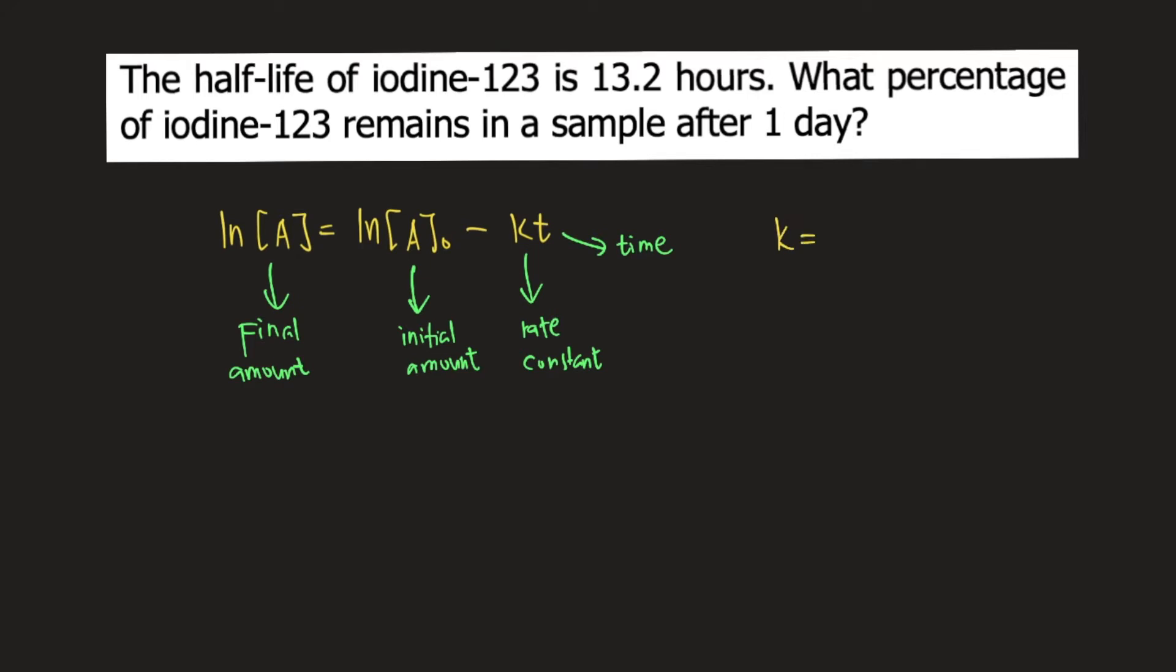Rate constant is equal to ln(2) divided by the half-life. So we can substitute this into the equation.